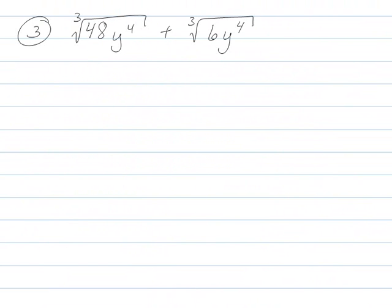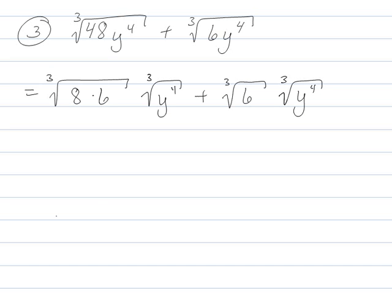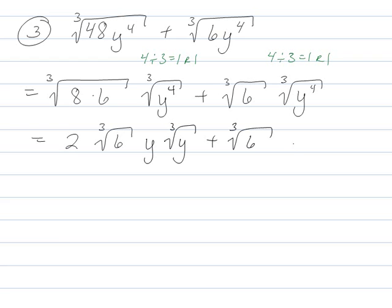One more. It's good for you. We'll separate these out into 48 is 8 times 6, cube root of y to the 4th. Cube root of 6, cube root of y to the 4th. Cube root of 8 is 2. I can do this one. 4 divided by 3 is 1 remainder of 1. 4 divided by 3 is 1 remainder of 1. So 1 remainder of 1. This guy is just a mess. 1 remainder of 1. So I've got those can go together. These guys can go together. That guy can be out front, and these guys can go together.